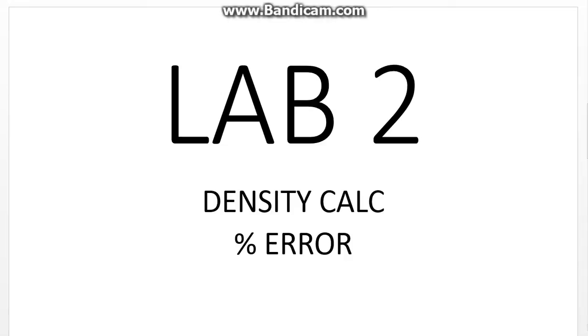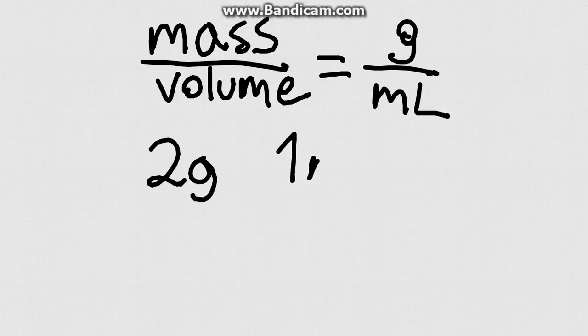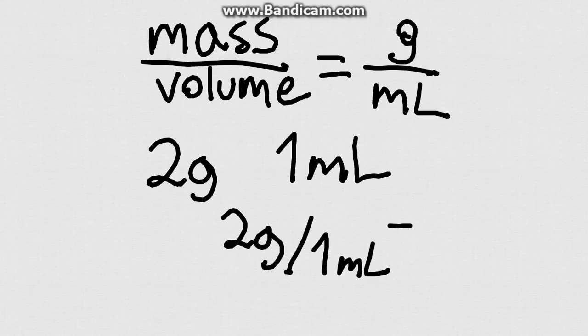Lab two: you need to know how to do the density calculation, and the density calculation is fairly simple. You simply take the mass of an object and divide it by the volume, and typically this measurement is in grams per milliliter. It doesn't always have to be, but that's generally how you would do it. So if we have an object that weighs two grams and it takes up one milliliter of space, then the density of this object would just be two grams divided by one milliliter. So it would have a density of two grams per milliliter.